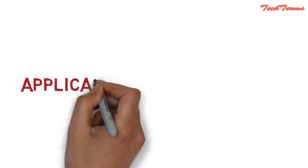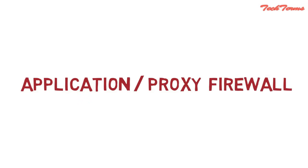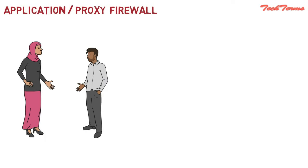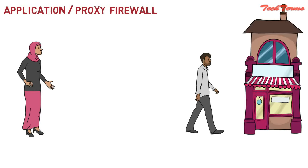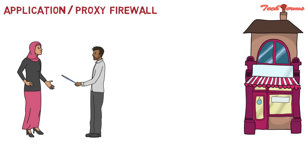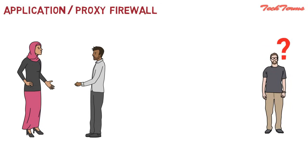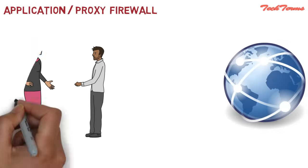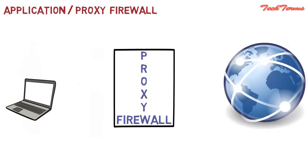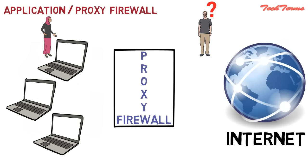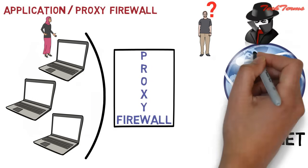The second one is application or proxy firewall. Let us understand it with an example. Suppose your mom asked you to buy a pen from the market. You go to the shop, buy the pen, come back home, and give the pen to your mom. Here you did the work your mom wanted without letting the shopkeeper know who actually wanted that pen. Same is the case with application or proxy firewalls. Replace the shopkeeper with the internet, your mom with personal computer, and yourself with proxy firewall. Similarly, proxy firewalls do not let the internet know which computer actually wants to visit the requested website.